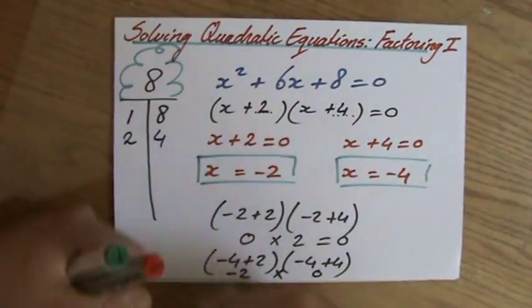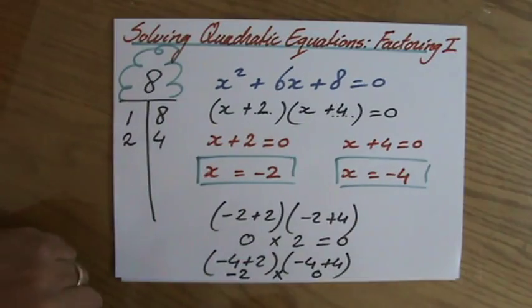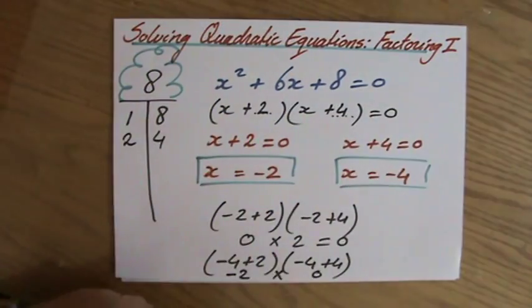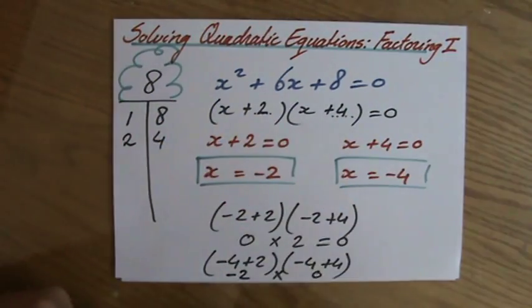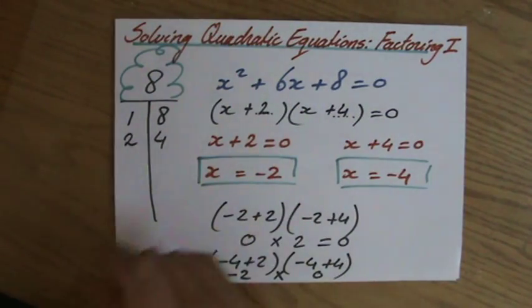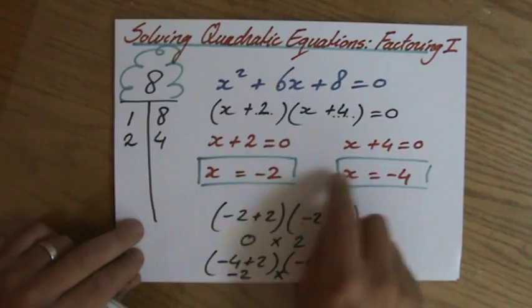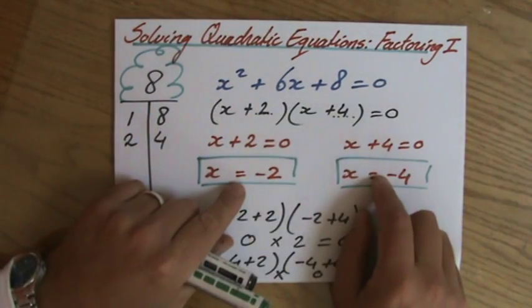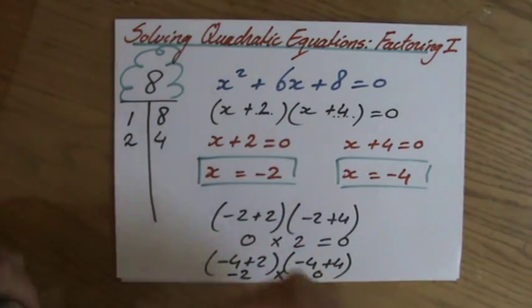So two answers. Factorize it. Then the ZPP tells you that either that has to be zero or that has to be zero. So X is minus two or X is minus four. Next video, I'm going to show you why or what these two answers mean. I'm going to give you more examples. So don't worry. I'll see you there.